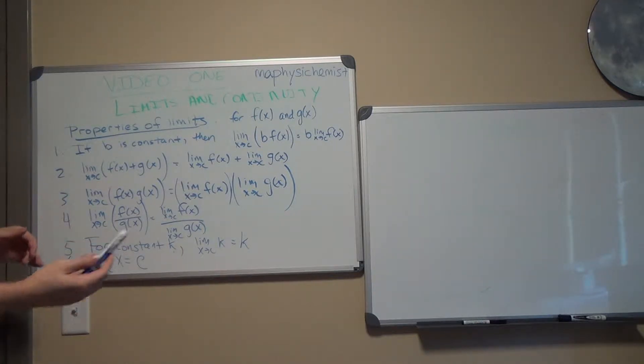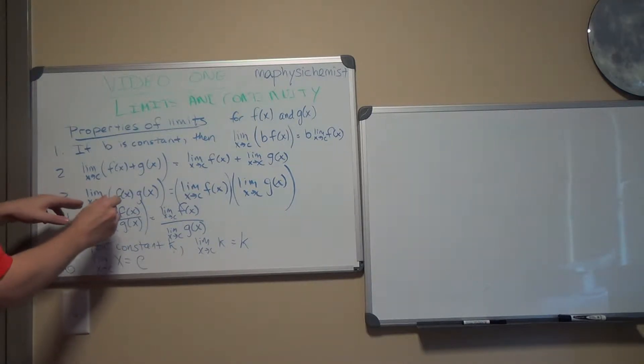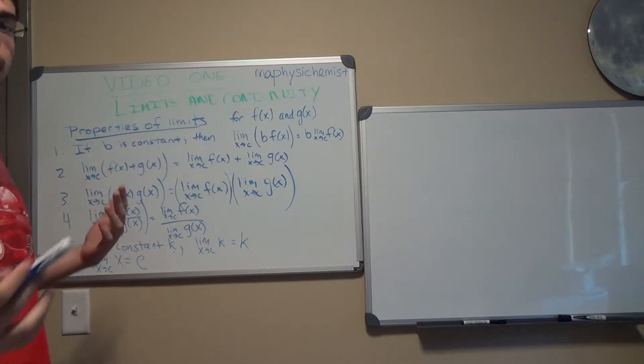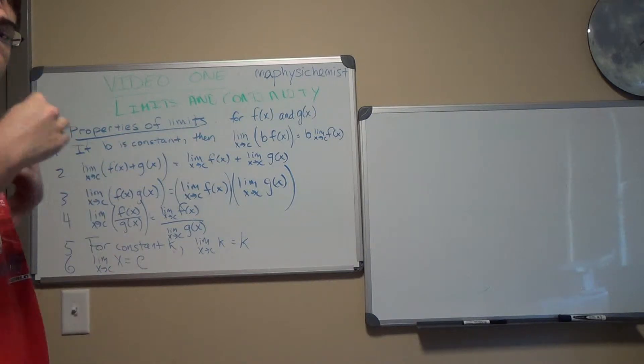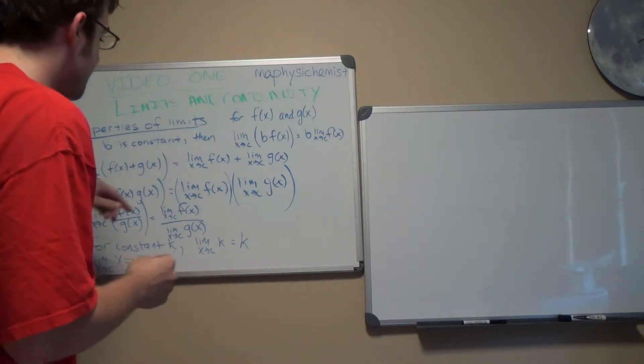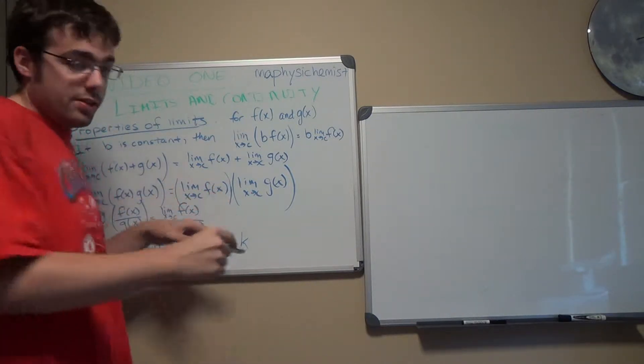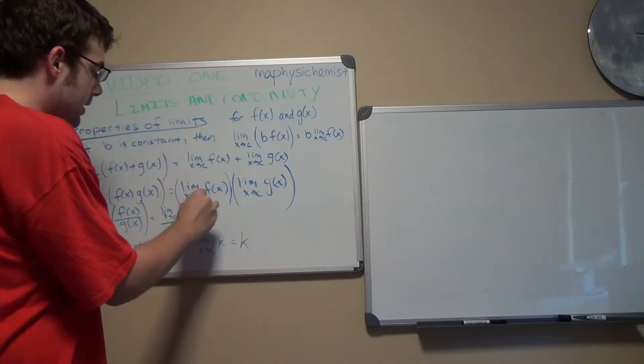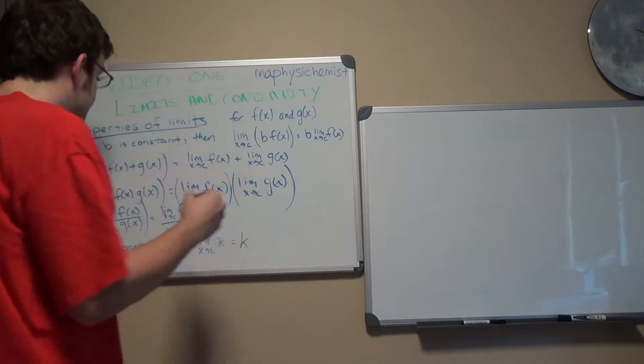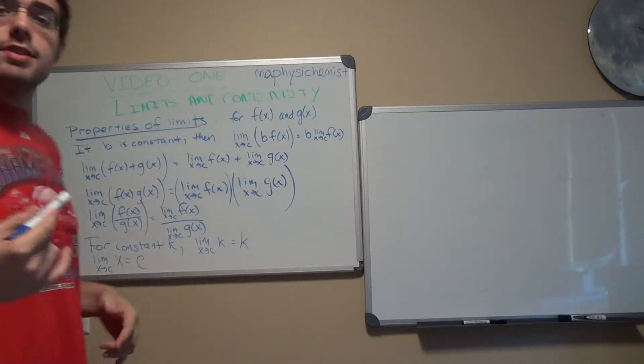The third type of limit is product. So if you take the limit of the product of f and g, you can get the same result by taking the product of the limits. So you can do limit of f times limit of g, and that's the same thing as doing the limit of f times g.